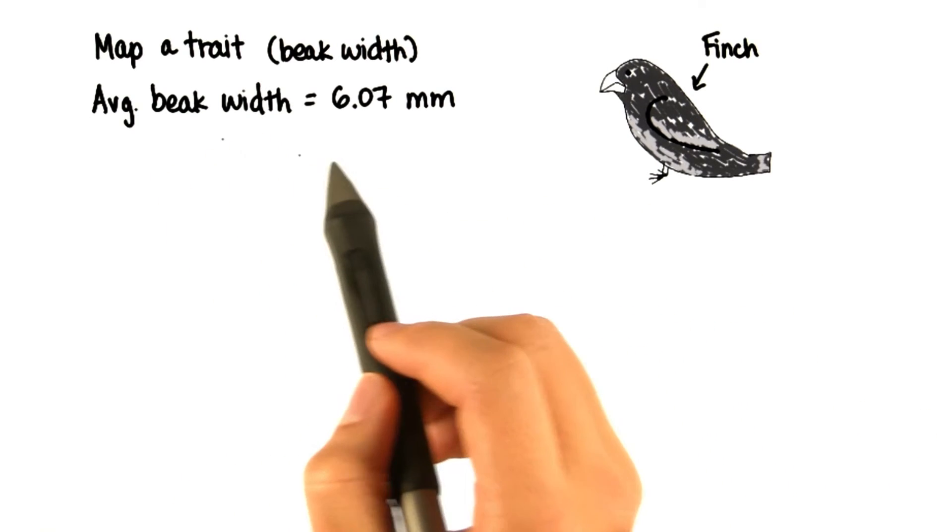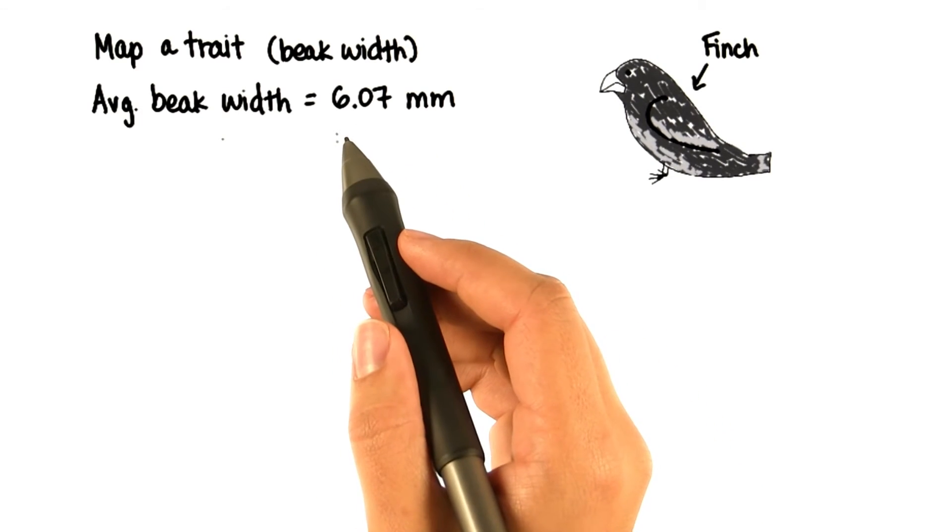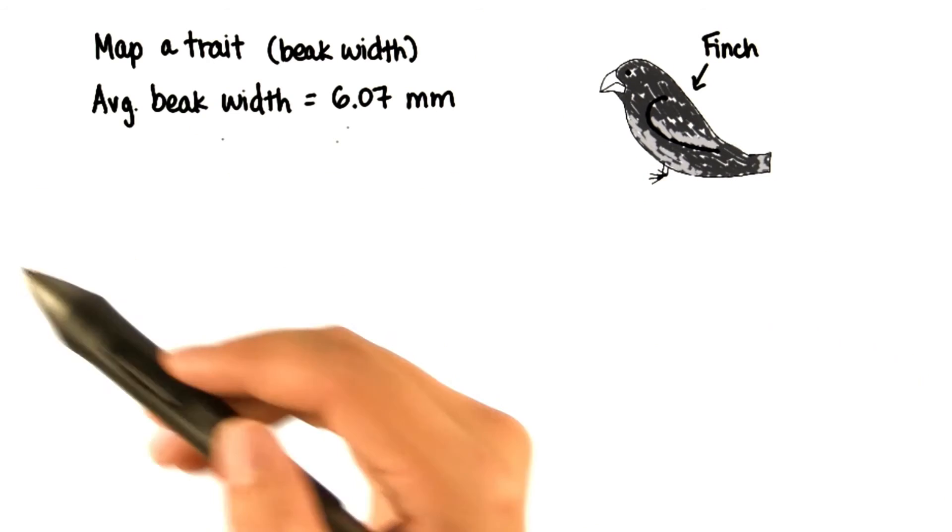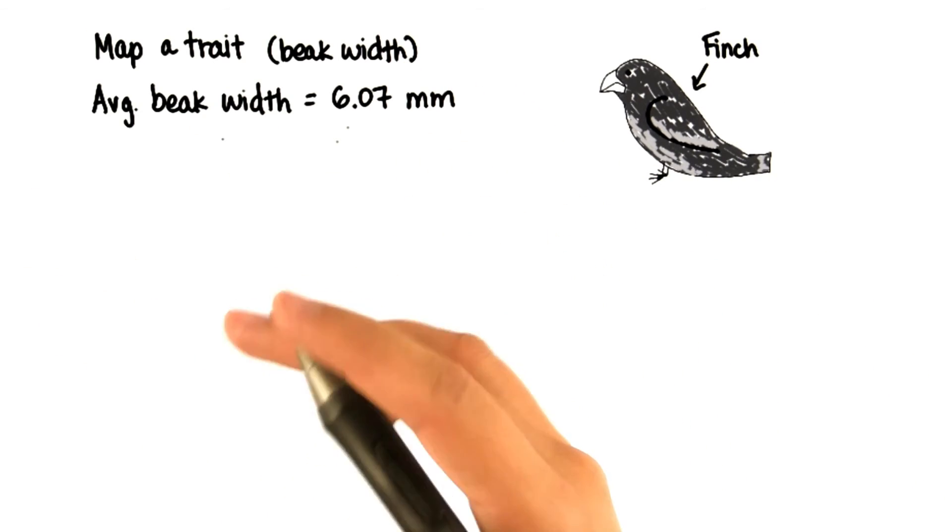Let's say we know that the average beak width of all finches is 6.07 millimeters. This includes finches that have been studied over the last few years. But now let's say we're studying a sample of finches from today.